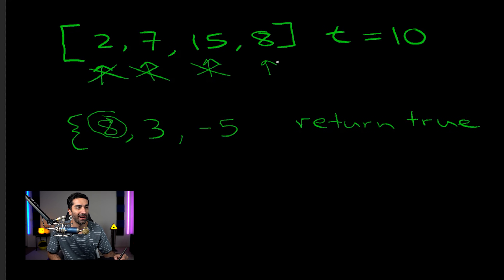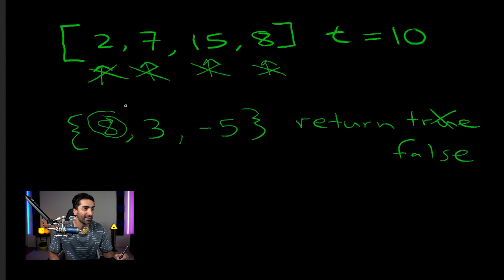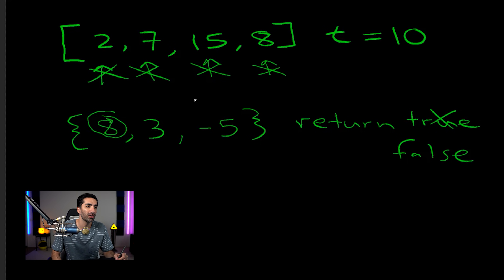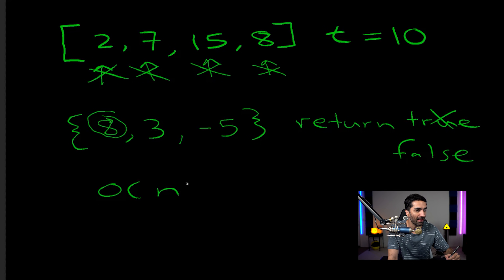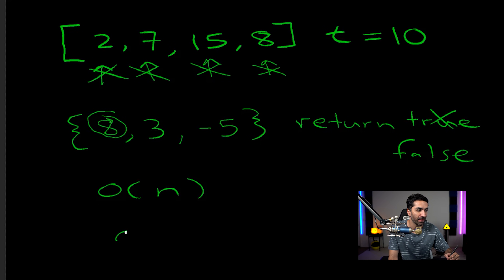If we had gotten to the end of the array without finding anything, we know there is no pair that adds up to 10 and we return false. The reason we use a set instead of a list is that with a list we'd have to iterate through every number to find our target, whereas with a set we can index directly into it. So the time complexity is O(N) since we only go through the list once, and indexing into the set is constant time. However, we do use the set in memory, so the space complexity is O(N) since the size of the set could equal the size of our initial list.